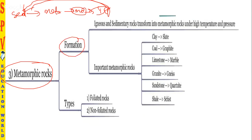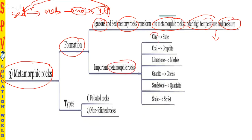For metamorphic rock formation, both igneous and sedimentary rocks can go through the metamorphic process. This process is called metamorphism. Metamorphism is the process of rocks going through high temperature and high pressure. In your exam, they may ask what causes metamorphism — the answer is high temperature and pressure. This transforms existing rocks into new metamorphic rock forms.